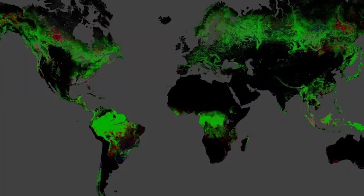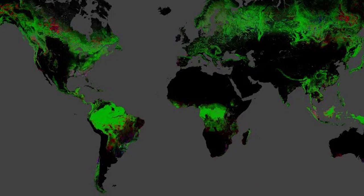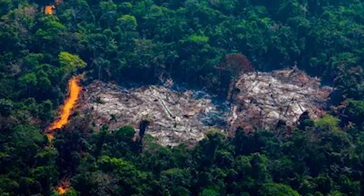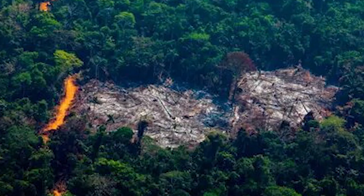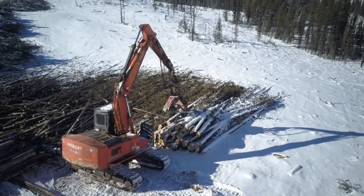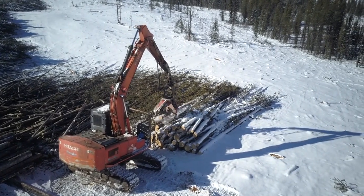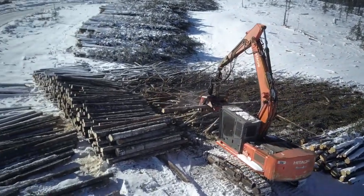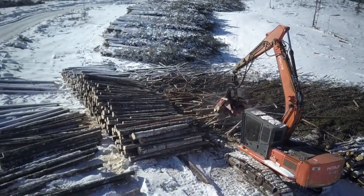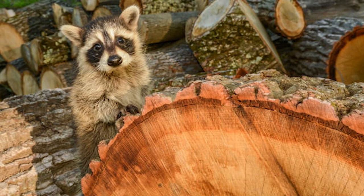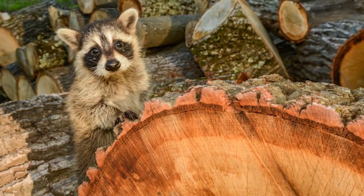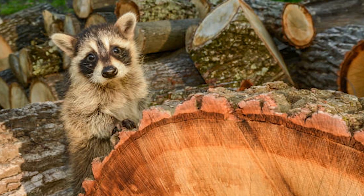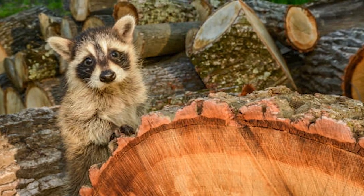Problem 3: Deforestation. Deforestation is another pressing issue for the future of our planet. With the world's population growing, we are cutting down more and more trees for agriculture, urbanization, and other uses. This will result in the loss of habitats for many species, increased carbon emissions, and a decline in biodiversity.